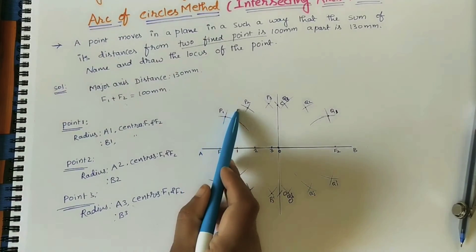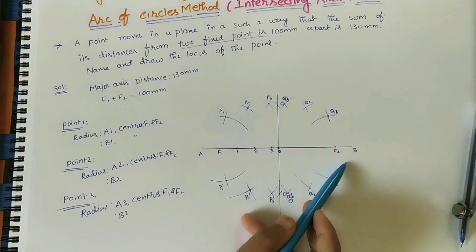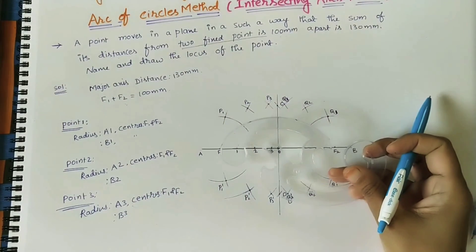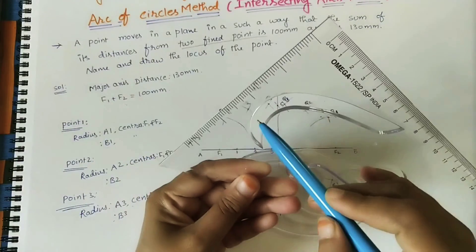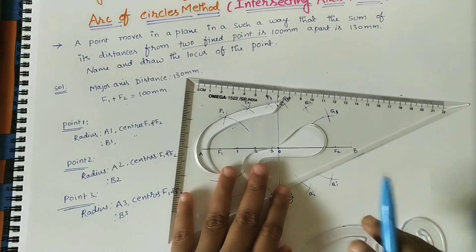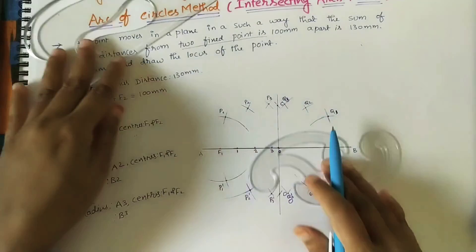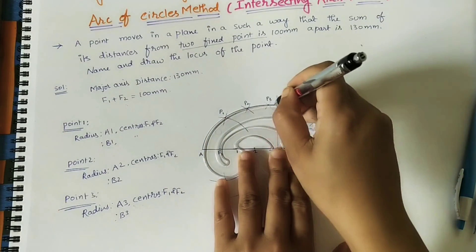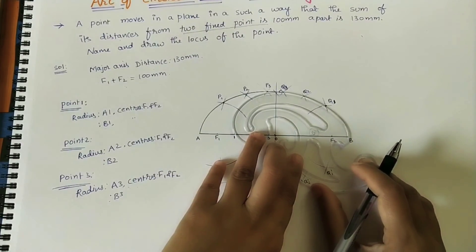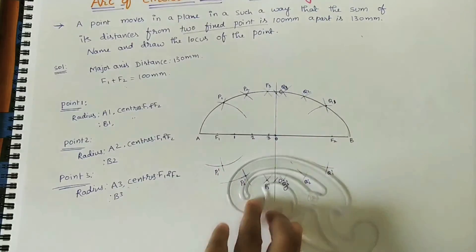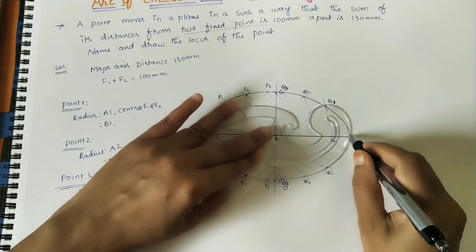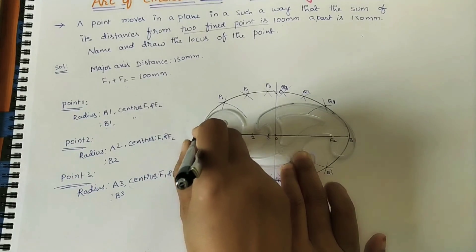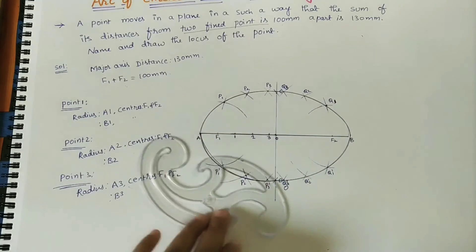Join all the points using a French curve — through A, P1, P2, P3, C, Q3, Q2, Q1, and then B, and through D and back to A — to get the complete ellipse. We can use this type of French curve for joining these points.